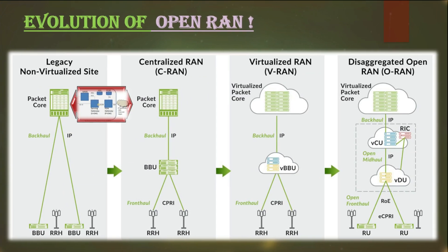Let's quickly look at the traditional RAN system. Here is the BBU — baseband unit — which also includes the radio unit. This is the core network part, the EPC (Evolved Packet Core), which includes components like MME, HSS, SGW, and PGW. There is connectivity with the external network and a backhaul for the connectivity between the RAN network and EPC. This is just a high-level overview — we are not going in deep today.